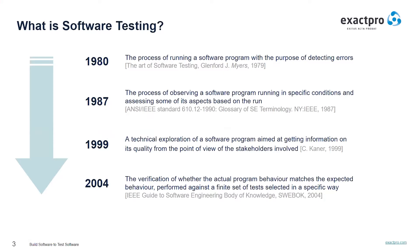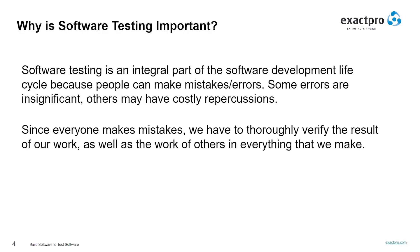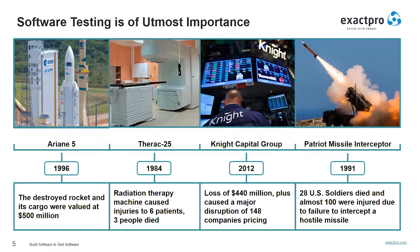Software testing is necessary because we all make mistakes. Some of those mistakes are important and some of them could be expensive. We need to check everything and anything we produce because things can always go wrong. Here are a few examples of how software failure could cost. A single bug in software could lead to significant money loss, reputation damage, or even death in some cases.